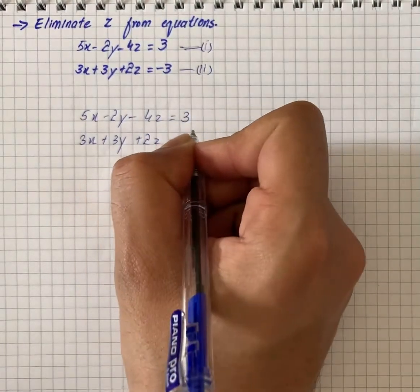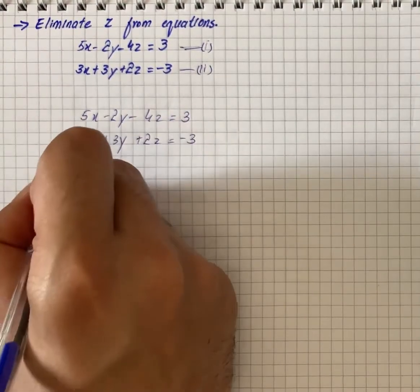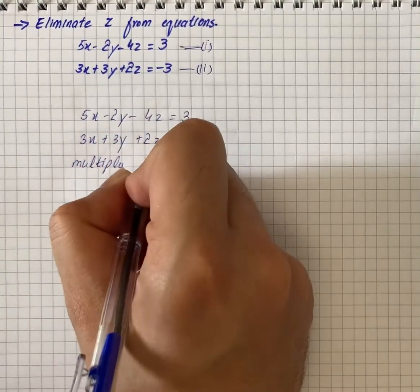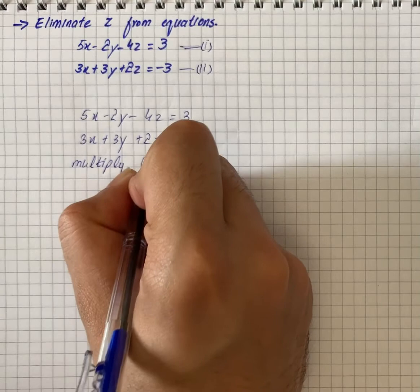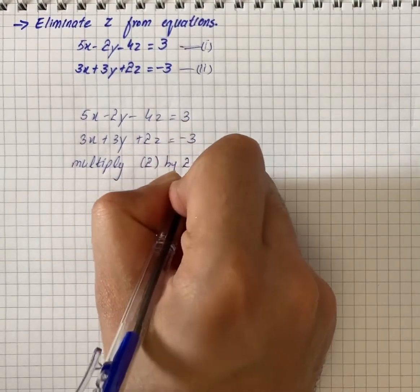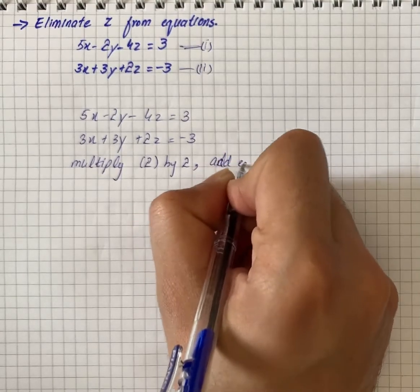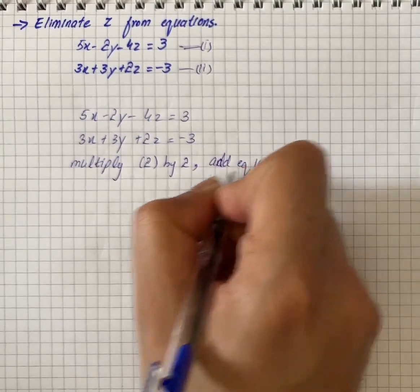So we will multiply equation 2 by 2 and we will add equation 1 and 2.